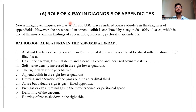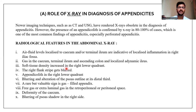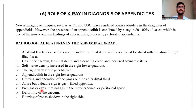X-ray is useful in diagnosing the presence of appendicolith, confirmed by X-ray in 80 to 100% of cases. Radiological features seen on abdominal X-ray include air-fluid levels localized to the cecum or terminal ileum, indicative of localized inflammation. There is gas in the cecum, terminal ileum, and ascending colon, as well as localized dynamic ileus, increased soft tissue density in the right lower quadrant, blurred right flank stripe, appendicolith, blurring of the psoas outline at its distal third, a gas-filled appendix, free or extra-luminal gas, and deformity of the cecum.